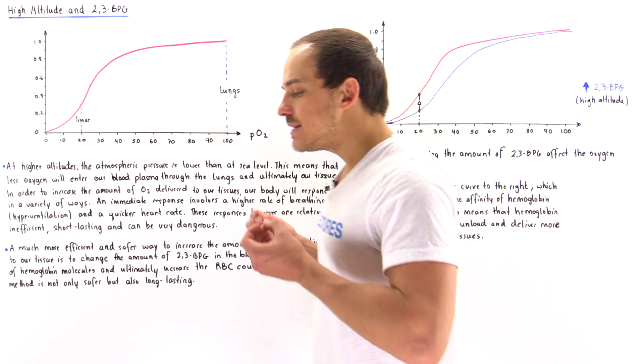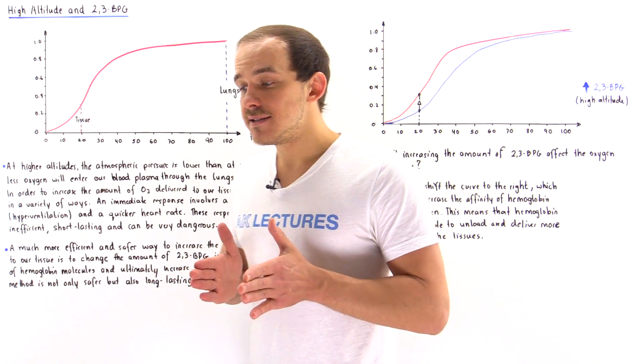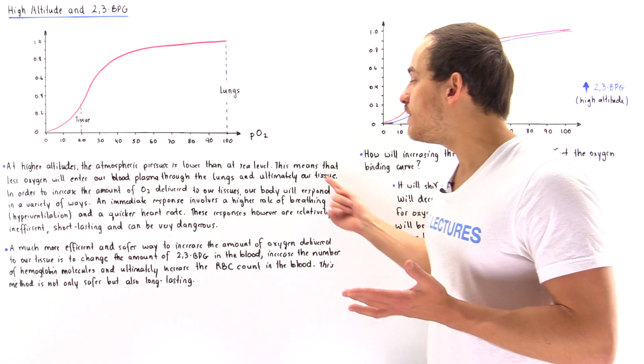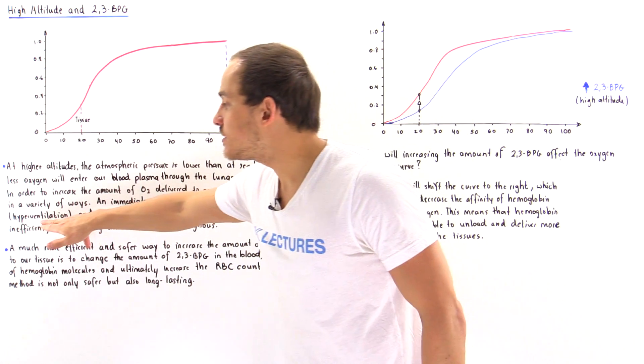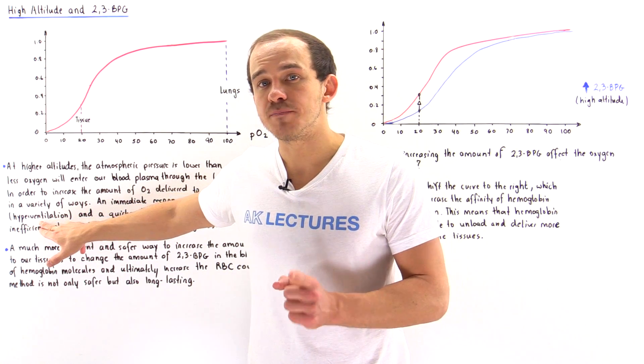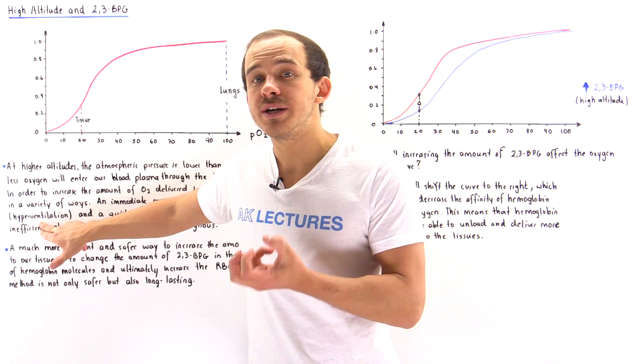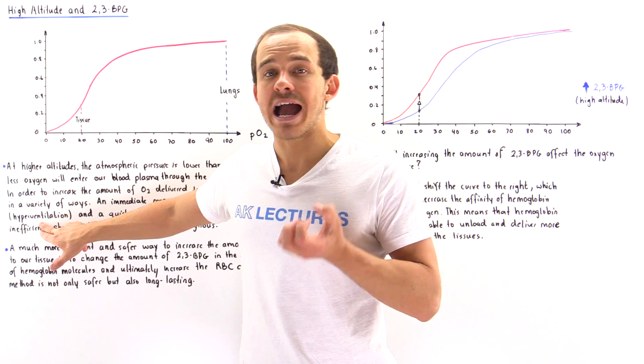What our body does immediately is it increases the rate at which we breathe, increasing the ventilation rate. This is known as hyperventilation, and it also puts stress on the heart by increasing the rate at which the heart pumps.